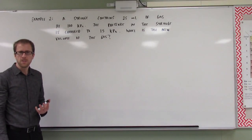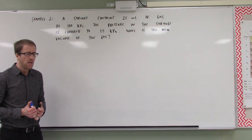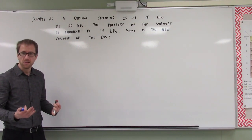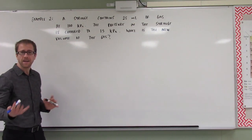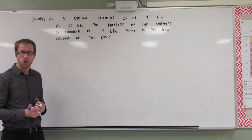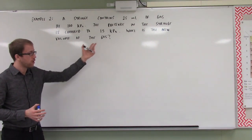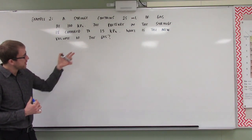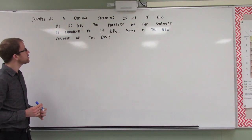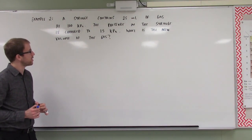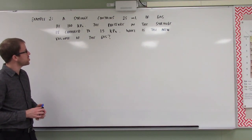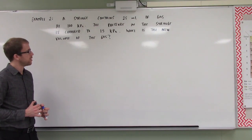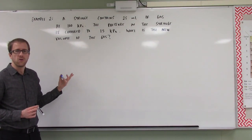Now let's explore a slightly more challenging problem where the numbers aren't quite as nice. It's hard to tell exactly what change occurred as a result of the change in pressure. Our syringe contains 25 milliliters of gas at 100 kilopascals. The pressure in the syringe is changed to 15 kilopascals. What is the new volume of the gas?